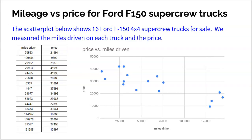The example we're going to look at is 16 Ford F-150 4x4 SuperCrew trucks that were for sale. The explanatory variable is the miles on each truck, and the response variable is the price of each truck. The scatterplot looks very negative, pretty linear, very strong — the more miles on a truck, the lower the price.